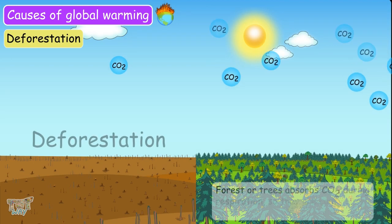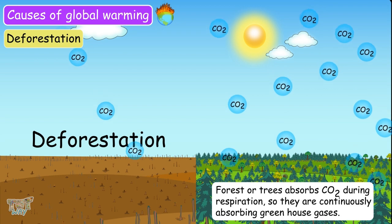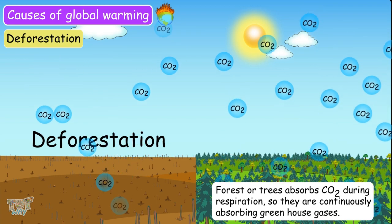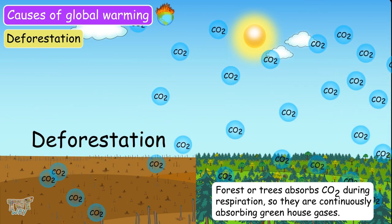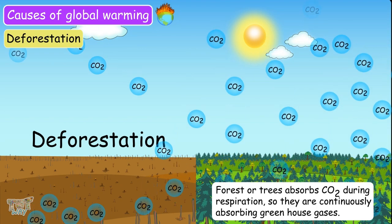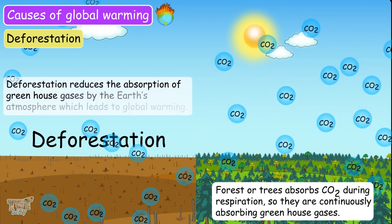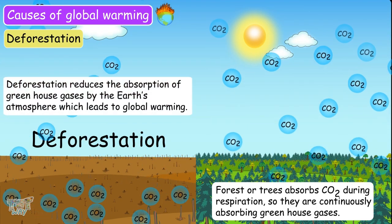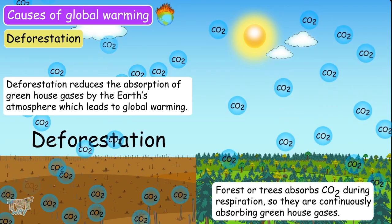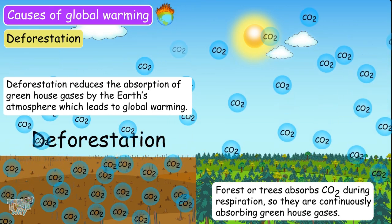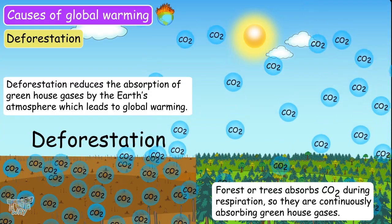Deforestation. We know forests and trees absorb carbon dioxide during respiration, so they are continuously absorbing greenhouse gases. But deforestation leads to a loss of trees from the Earth, so deforestation reduces the capability to absorb the greenhouse gases, which leads to global warming.